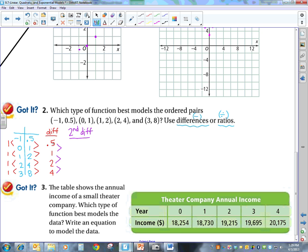So 1 minus 0.5 is 0.5. 2 minus 1 is 1. And 4 minus 2 is 2. So we do not have any common differences here. So that means now I need to go look at the common ratio.